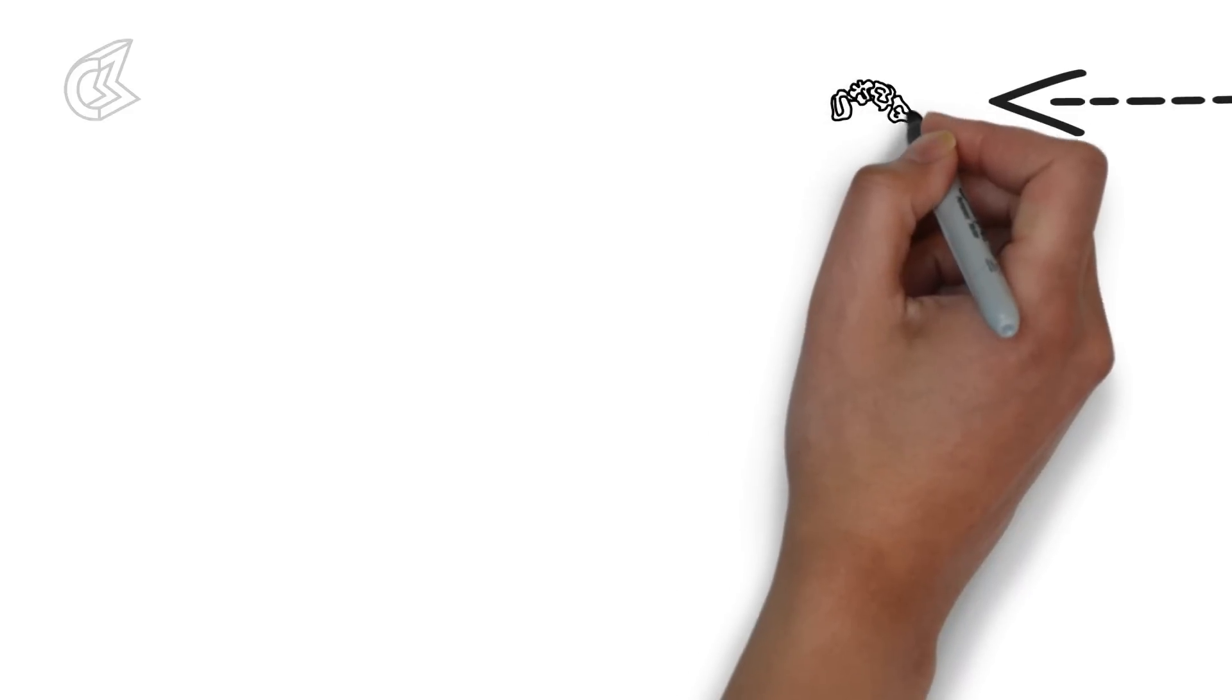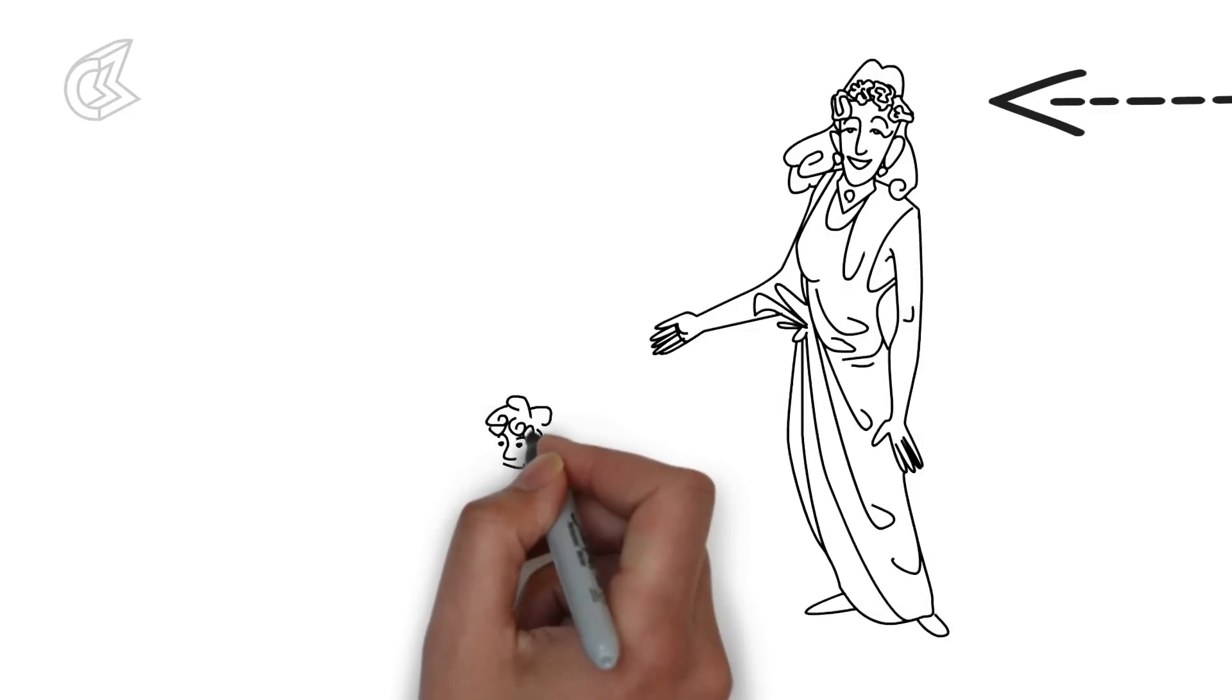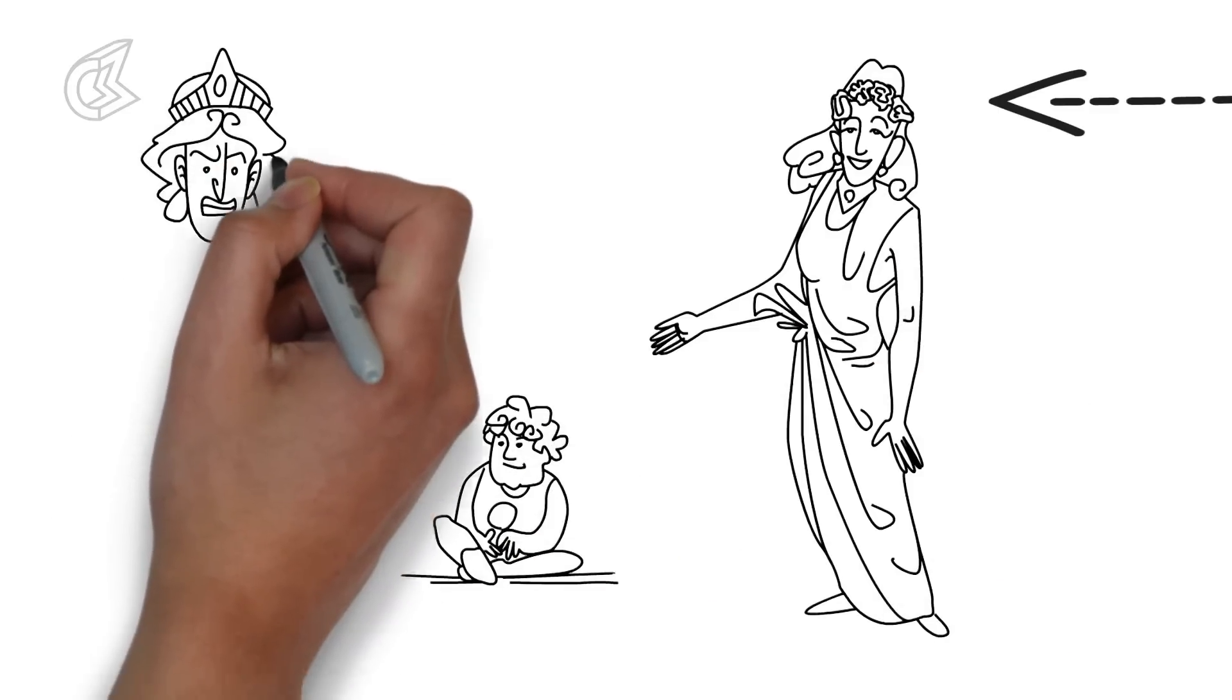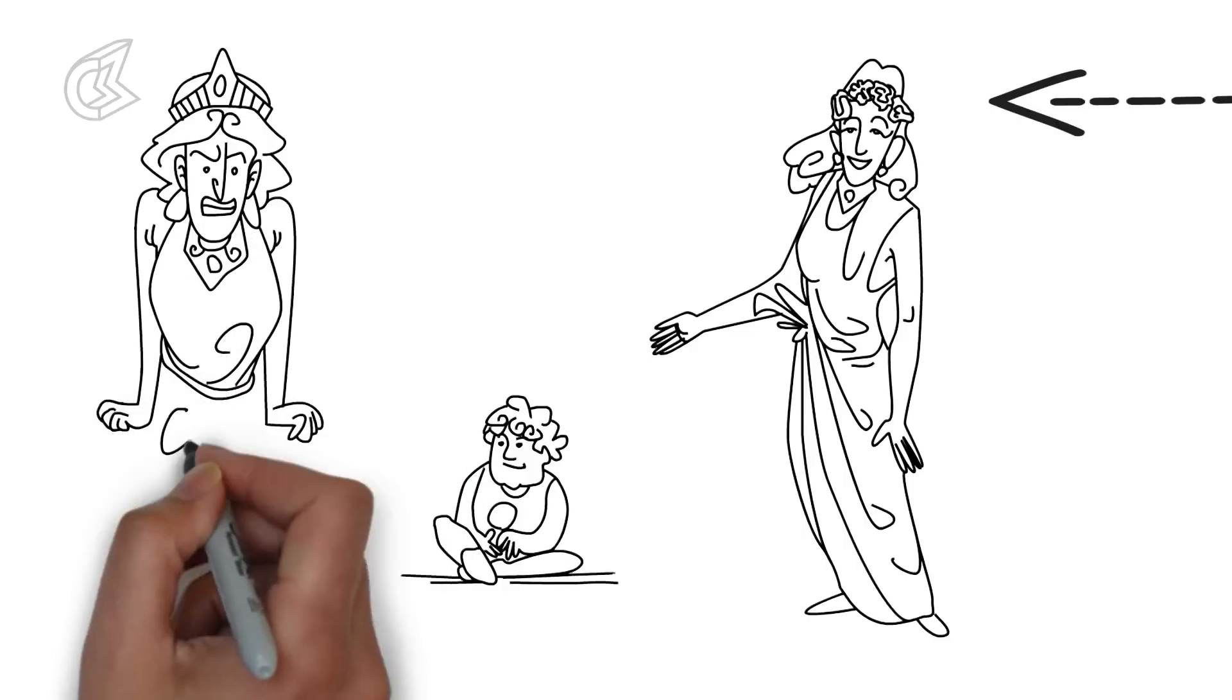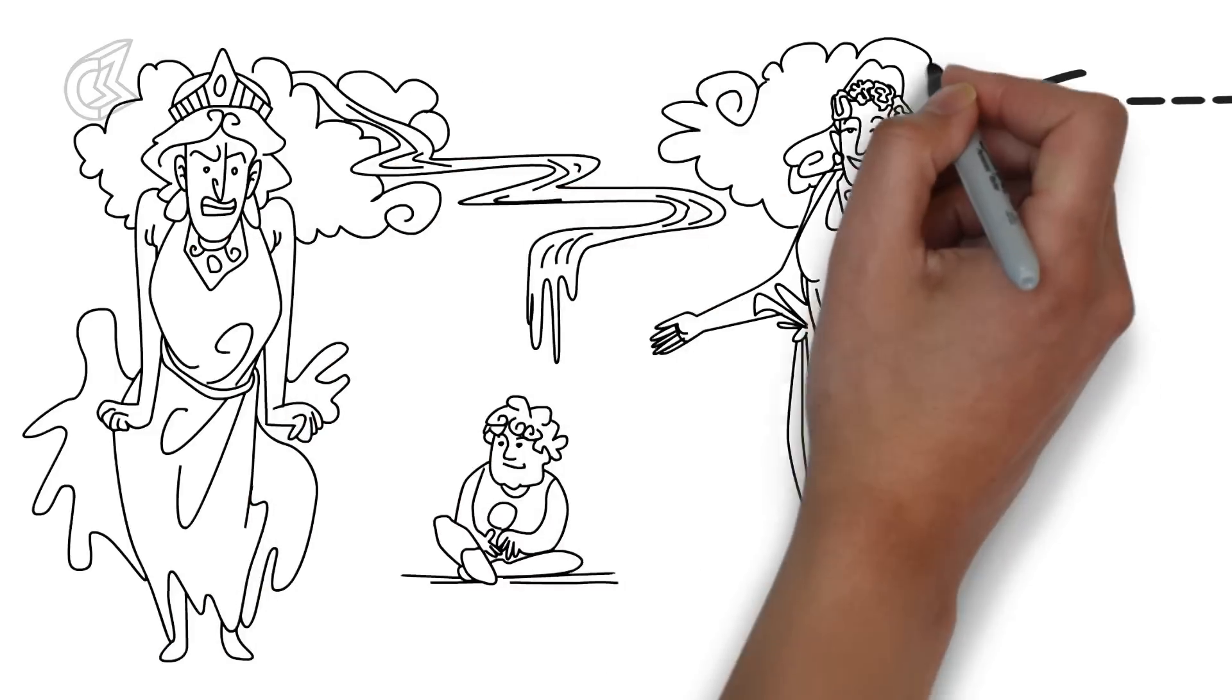Out of Zeus' affair with a mortal woman called Alcmena, the hero Hercules was born. Zeus even got Hera to breastfeed the baby Hercules. When Hera found that the child was not hers, she pushed him away. It is said that the Milky Way is a result of a spurt of Hera's breast milk.